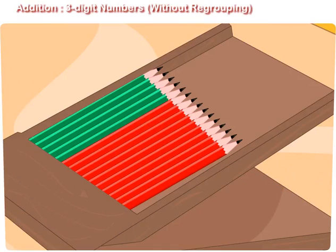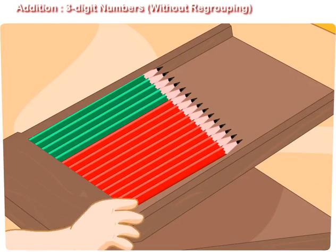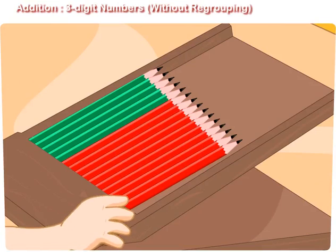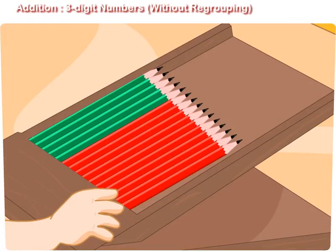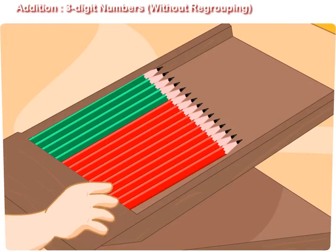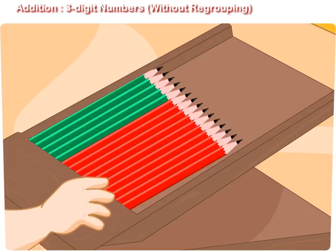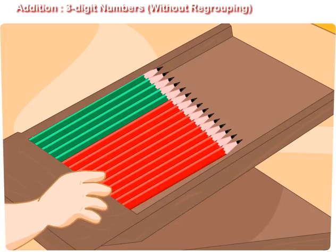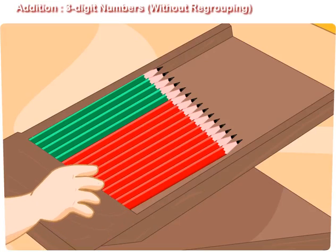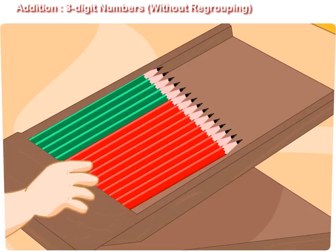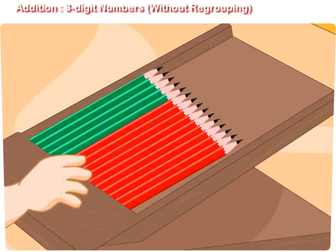Can you tell how many red and green colored pencils are there? One, two, three, four, five, six, seven, eight, nine, ten.